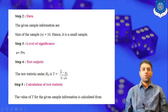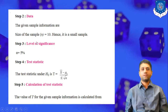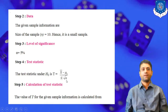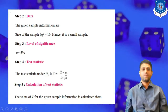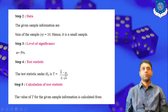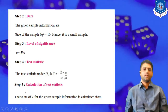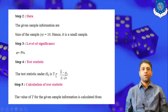Step 4: identify the t-statistic. The t-statistic corresponding to this null hypothesis is t = (x̄ − μ₀) / (s / √n), where x̄ is the sample mean, μ₀ is the population mean, s is the standard deviation, and n is the total number of observations.